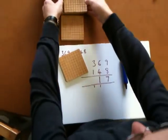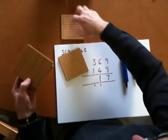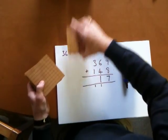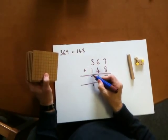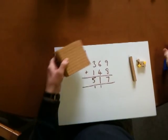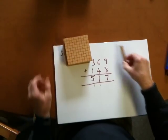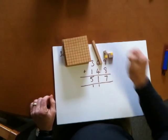Now we gather together the three hundreds and the 100 and the 100 that we've just found and all together we've got five hundreds. So we now have five hundreds, one 10, seven units, five hundred and seventeen.